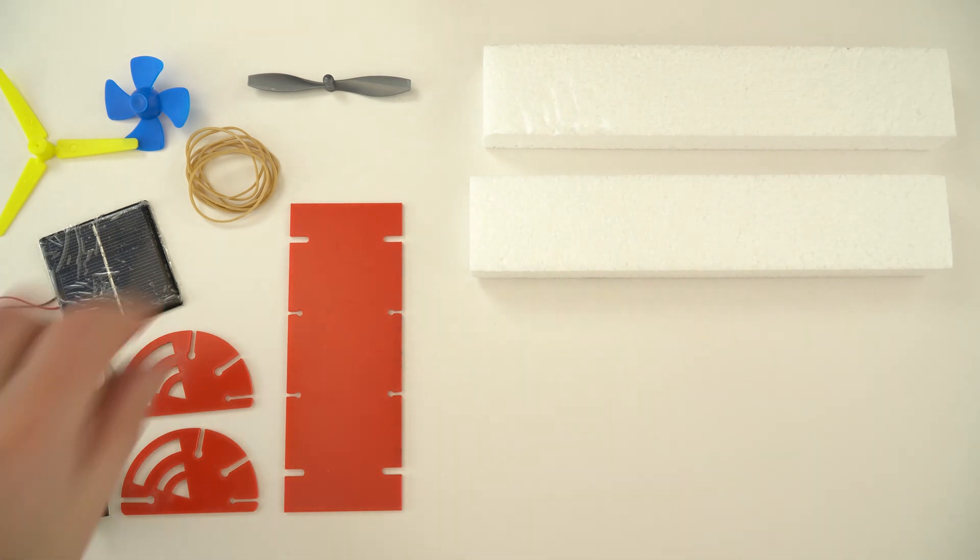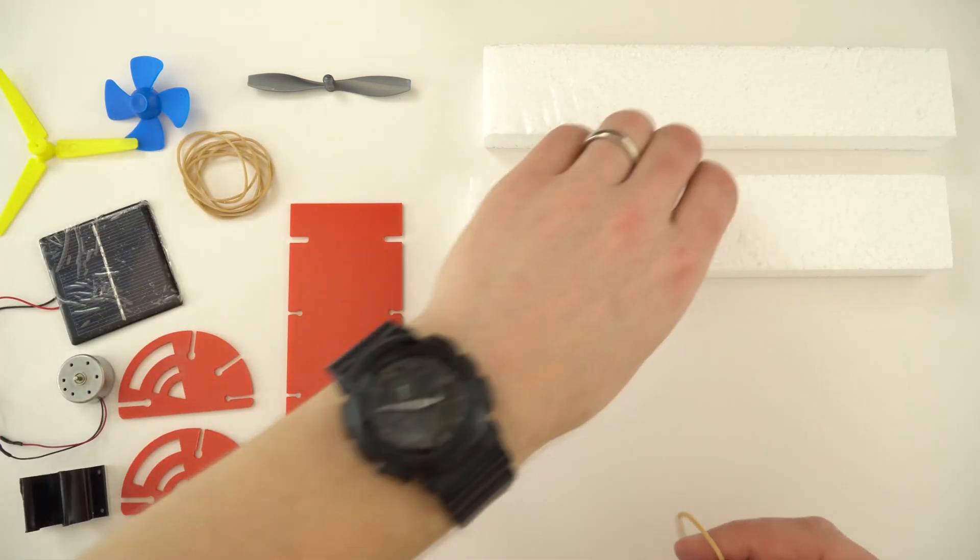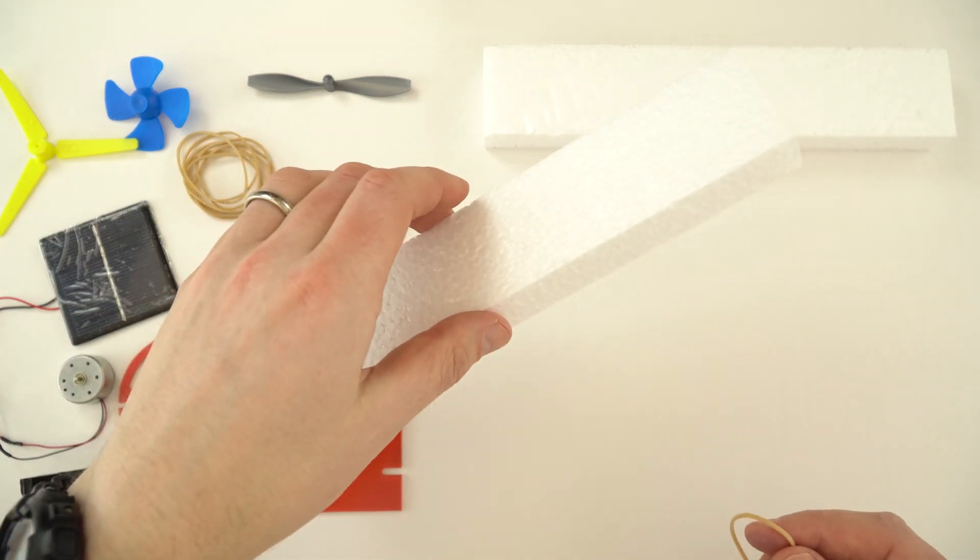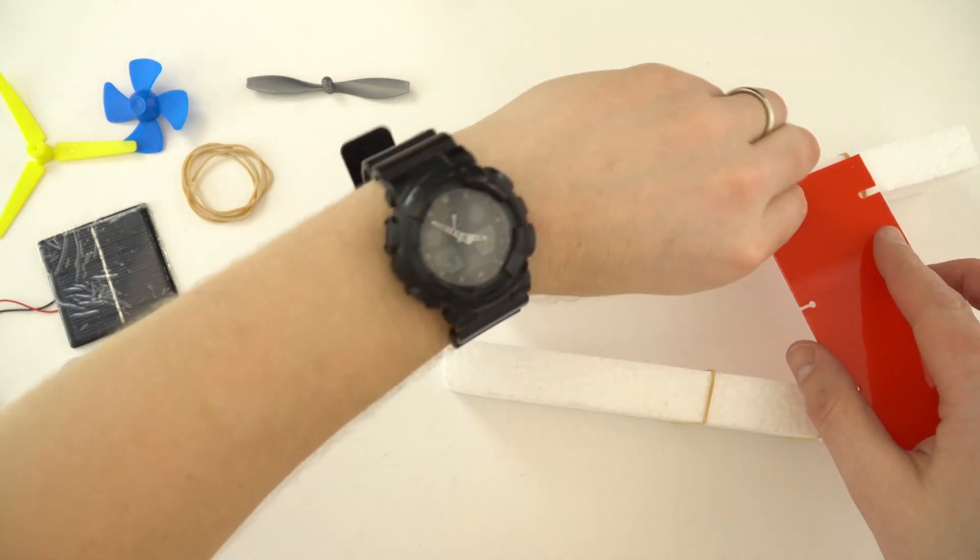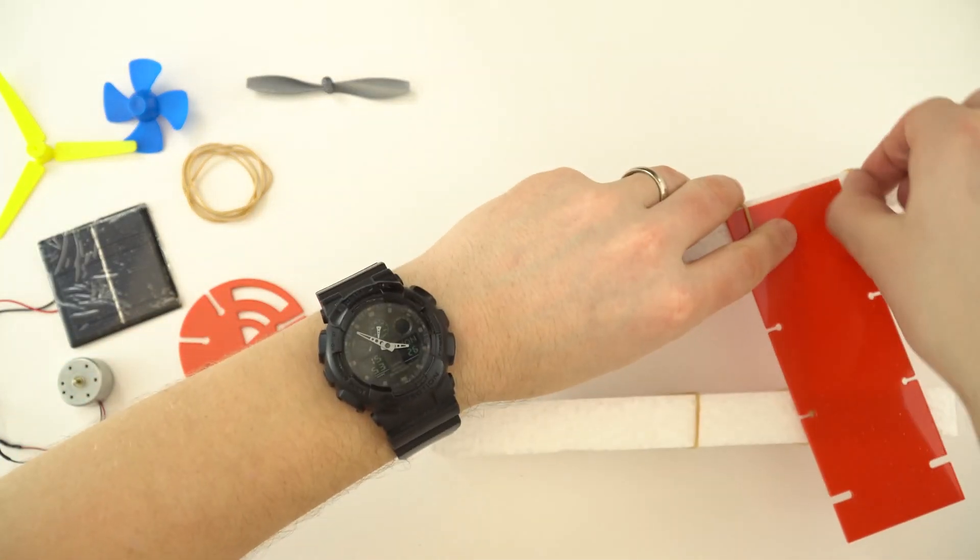So the first thing to do is just attach a couple of rubber bands to each one of the bits of polystyrene. And now this piece of deck just slots underneath the elastic bands.